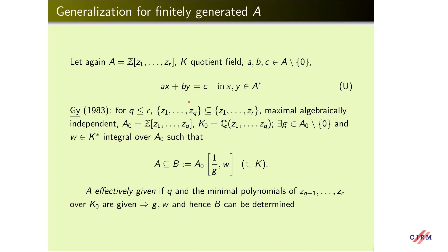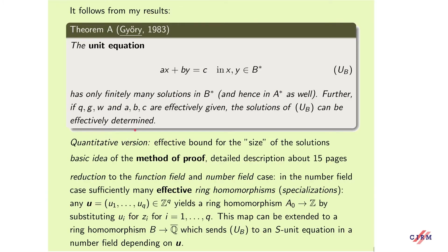It is more convenient to consider this unit equation in a larger ring B, which is again finitely generated, so its unit group is also finitely generated, but it is easier to deal with this over-ring of A. From my results one can deduce the following. Consider this unit equation over B. Then this has only finitely many solutions in B* and hence in A* as well. Further, if these parameters are effectively given, then the solutions can be effectively determined. A quantitative version was also given with a bound for the size of the solutions, where the size will be defined later.